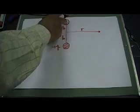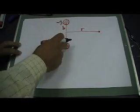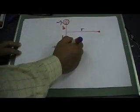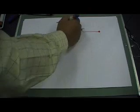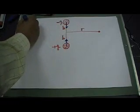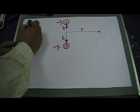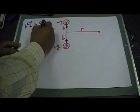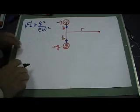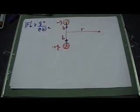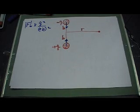The force on either charge — this one on that one or that one on this one — will have the same magnitude but opposite direction. If I want the force on one charge it will point one way, and the force on the other charge will point the opposite way. The magnitude is F equals K times Q squared divided by (2B) squared. The sum of these two forces is zero because they are equal in magnitude and opposite in direction.